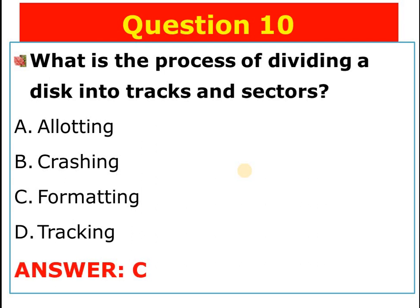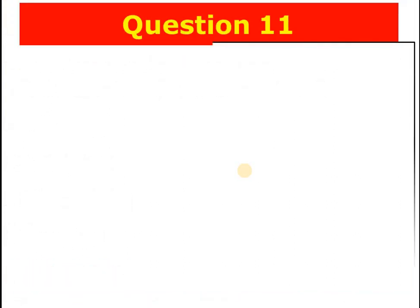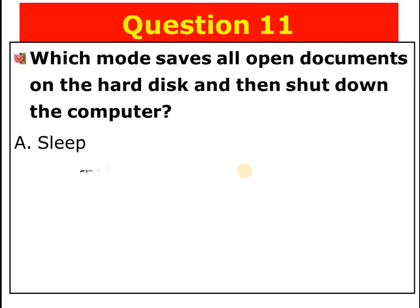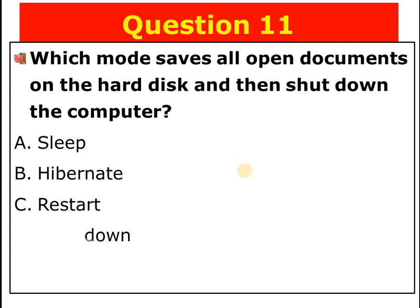Question number eleven: Which mode saves all open documents on the hard disk and then shuts down the computer? A) Sleep, B) Hibernate, C) Restart, D) Shut down. The answer is B — hibernate saves all open documents on the hard disk and then shuts down the computer.